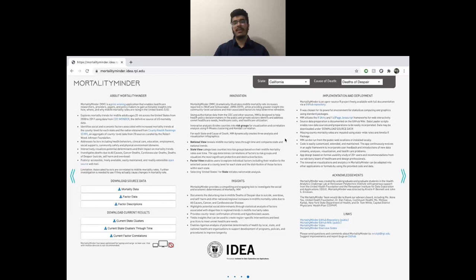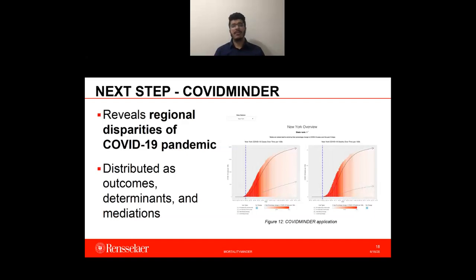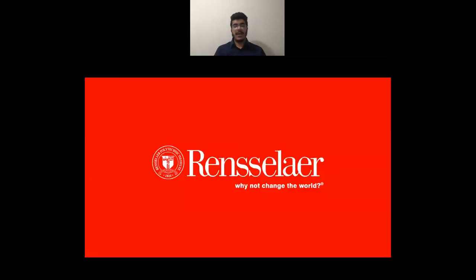This brings us to the last and final page — the MortalityMinder about page. It tells you what MortalityMinder is, the innovations made, risk groups, the various views created, the insights drawn, and how everything was implemented. By developing MortalityMinder, we learned a lot about application development, healthcare, and mortality trends, and we were ready to take it to the next level — COVIDMinder, a pandemic application that studies and reveals regional disparities of COVID-19 across the United States and New York. The information is split into outcomes which are the direct effects of COVID-19, determinants such as diabetes that impacted these outcomes, and mediations which are resources to combat the pandemic. Figure 12 shows the homepage for COVIDMinder, which provides a state report card — a one-stop solution for extensive COVID information for that particular state. Thank you for joining in today. If you have any questions, please reach out to me through email.